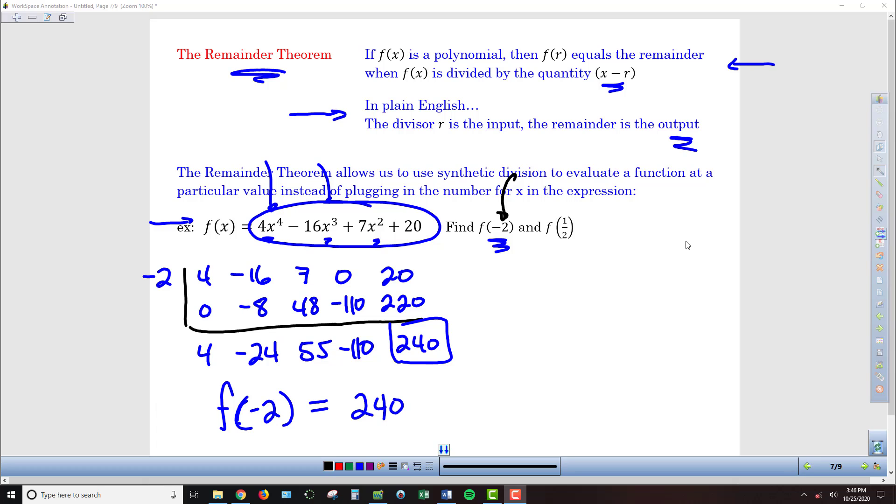While it may be debatable whether using synthetic division or just plugging in negative 2 everywhere is easier to figure out what f of negative 2 is, we're going to see that there's no doubt it's much easier to use synthetic division to find f of 1 half. Because again, if I had to plug in 1 half for x everywhere, I'd have to raise it to the 4th power, I'd have 1/16 times 4, I'd have all these fractions to carry through the problem.